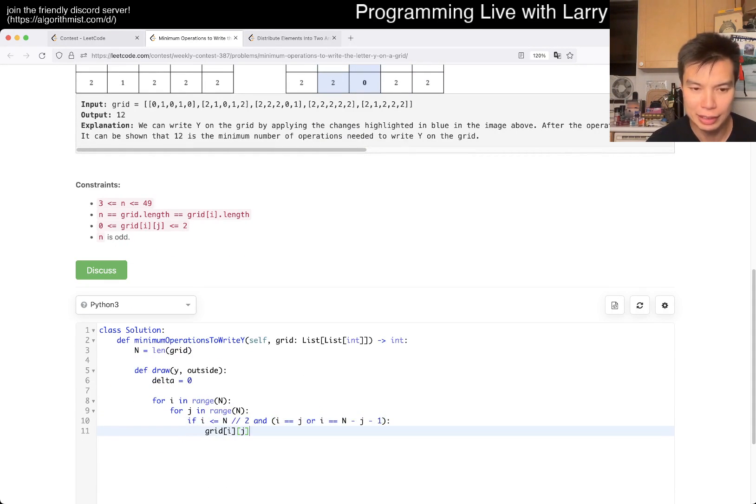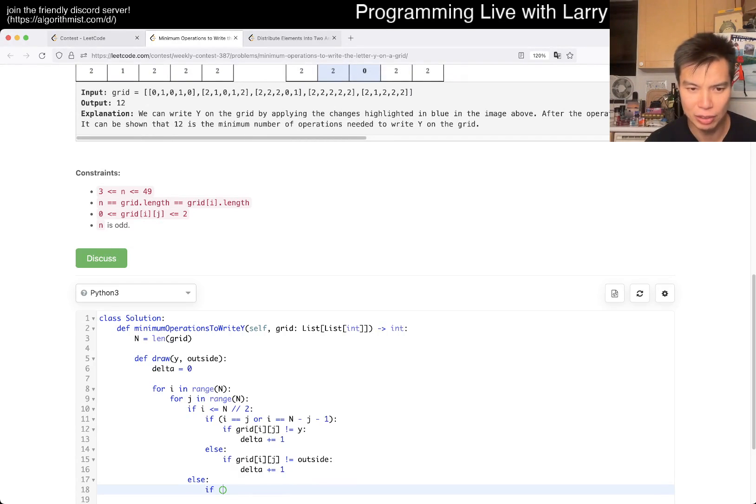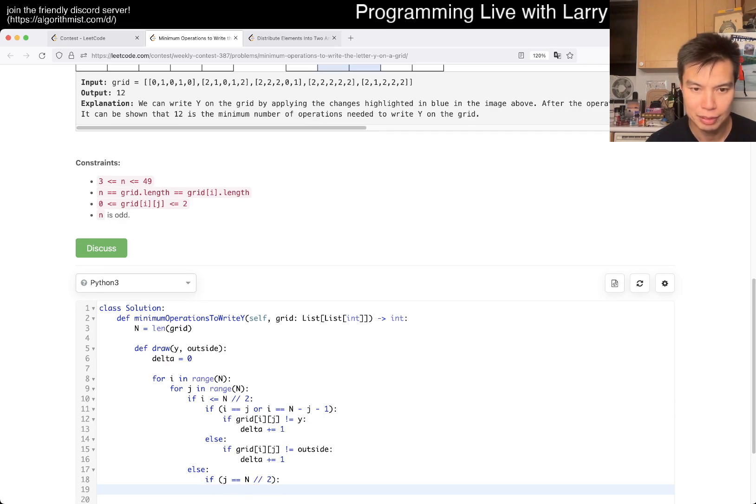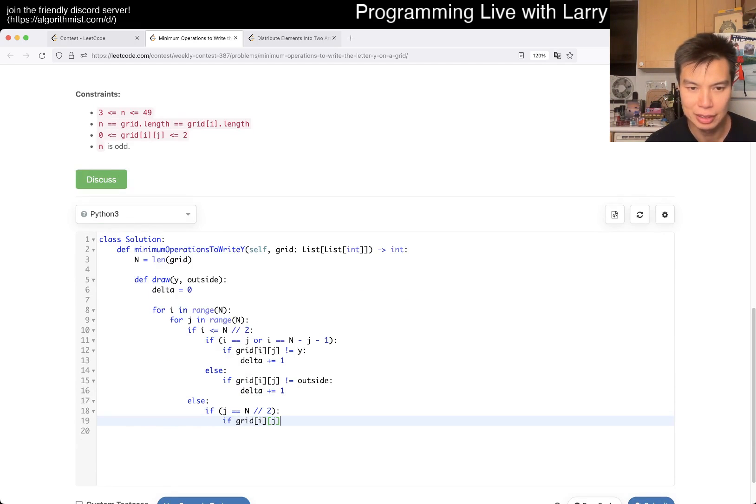Otherwise it's good. I have to kind of write this in a funky way. Okay, so if this is the case, then... If this is the case, otherwise we want if grid I, J is not equal to outside, then delta increment by 1. Otherwise, we have to bottom, so then this is just if J is also equal to N over 2, right? If this is the case, if grid of I, J... It's just case analysis. It's so easy to mess this up, I think.